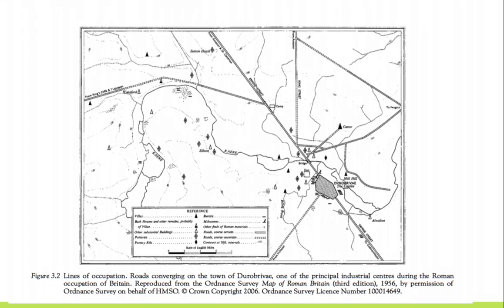But how do we capture these ideas within a map? Ingold notes the roads converging on Dorchester, one of the industrial centers during the Roman occupation of Britain. These are transport roads that cut across the landscape and are not interested in the meandering rivers, hills, or heaths surrounding the center.